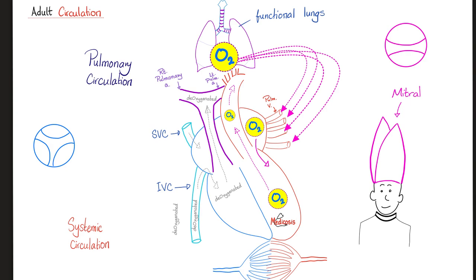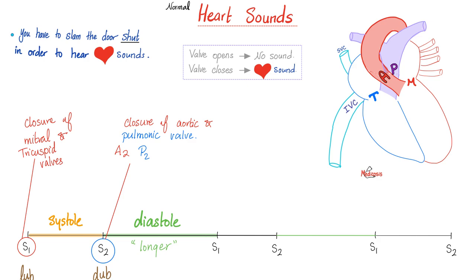The purpose of a valve is to allow fluid to move in one direction only and prevent backflow — like the valve on a car tire that lets air in but not out. When the valves close, you hear heart sounds. When a valve opens, you hear nothing. Lub-dub: lub is S1, dub is S2. Between S1 and S2 is systole; between S2 and the next S1 is diastole. S1 is caused by the closure of the mitral and tricuspid valves, after which the ventricle ejects blood. S2 is caused by the closure of the aortic and pulmonic valves.